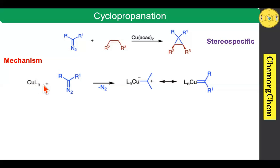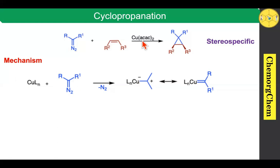When the copper-based salt interacts with the diazo compound, it readily kicks off nitrogen gas, which produces the corresponding copper carbene complex. In the resonance form, the carbene center donates electrons to the copper center, so this center carries positive charge and this center carries negative charge. Not only copper acetylacetonate — instead of copper acetylacetonate, you can use copper sulfate, copper triflate, and some other copper salts, which can also do a similar type of reactivity.